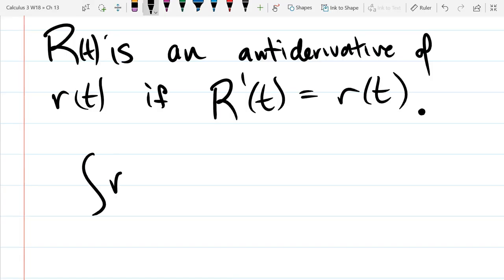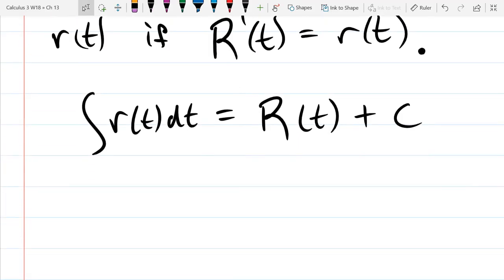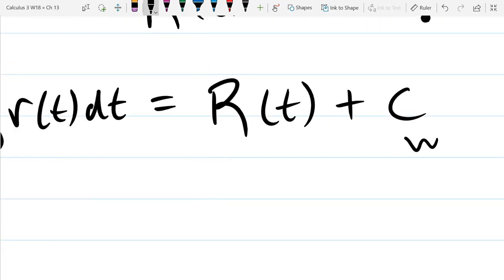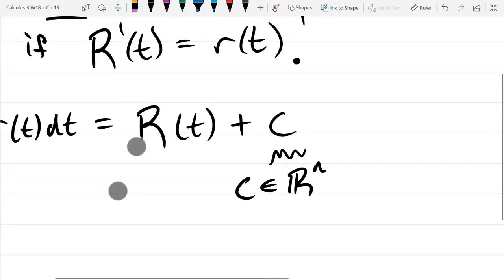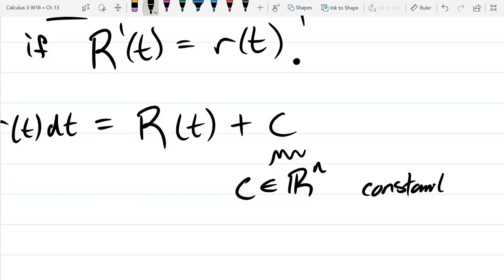So we could write integral r of T, dt equals big R of T. If it's indefinite, we're going to get a plus constant, just like we got before. So that's why I said an antiderivative, not the antiderivative. So there's infinite antiderivatives. They all differ by a constant, just like before. However, there's one thing you have to be aware of. What type of constant is this? It's a vector constant. Our constant is a vector. Doesn't make sense to add a number to r of T. So C is now a vector. So C is an Rn. So it's now a constant vector. So you have to pay attention to what type of object you're working with, if it's a vector or a number.